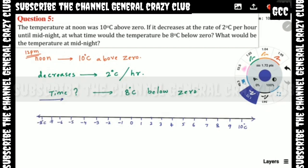On the number line, from plus 10 down to minus 8 degrees Celsius. At 12 PM noon, temperature is 10 degrees Celsius. It decreases by 2 degrees Celsius every hour.